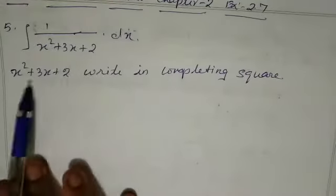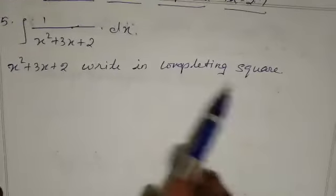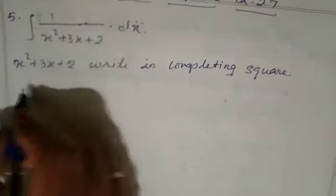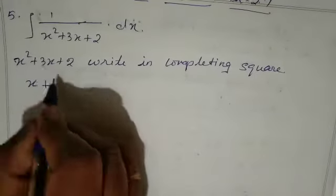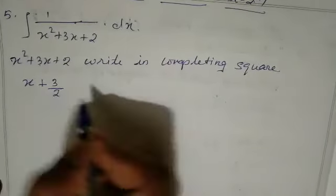So here the denominator we have to write in completing square. So completing square, we have to write x and then plus 3 is there, so that is 3 divided by 2.